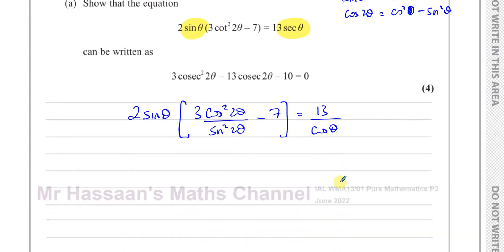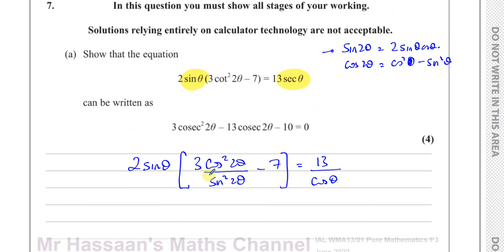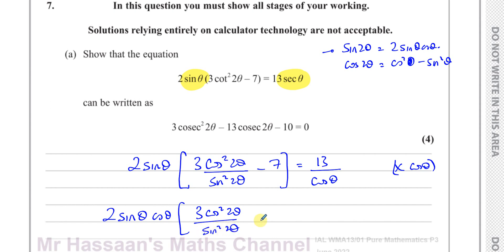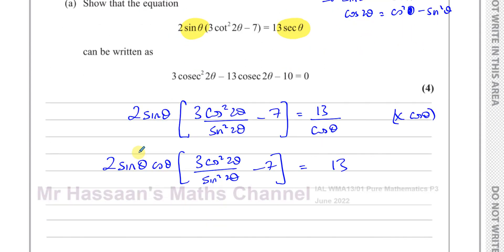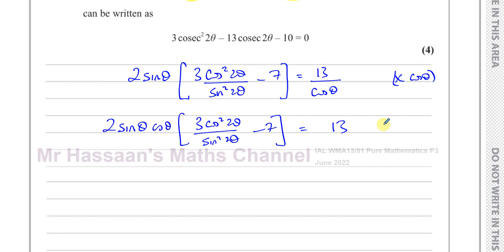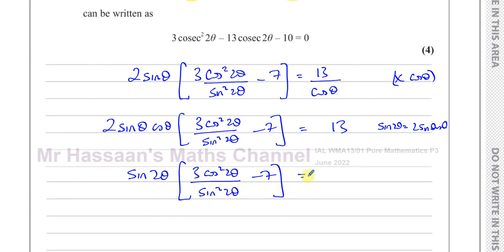Now I'll multiply both sides by cosθ. On the left, 2sinθ · cosθ appears, giving the expression sin2θ via the identity sin2θ = 2sinθcosθ. The equation becomes: sin2θ · (3cos²2θ/sin²2θ − 7) = 13.